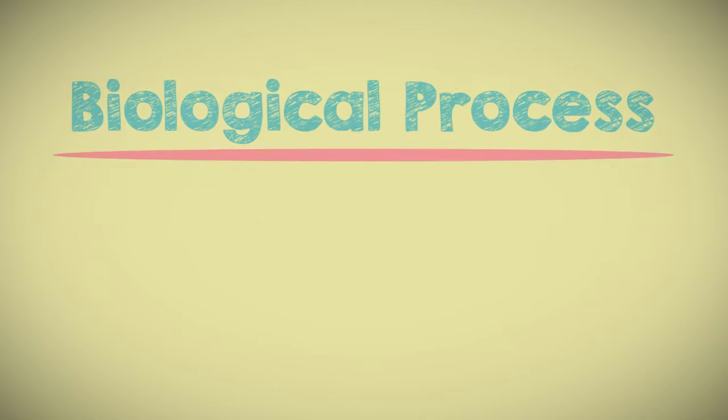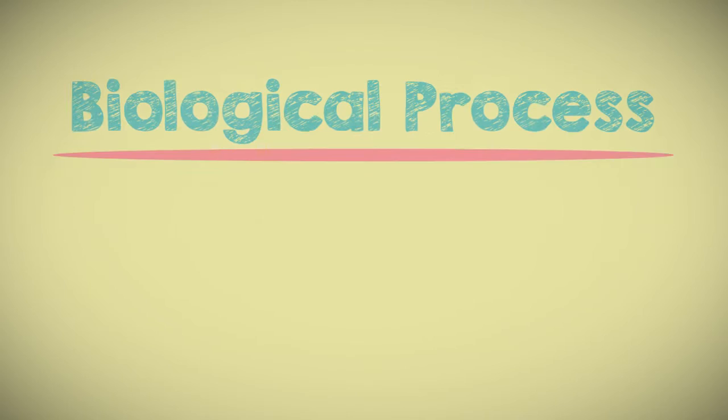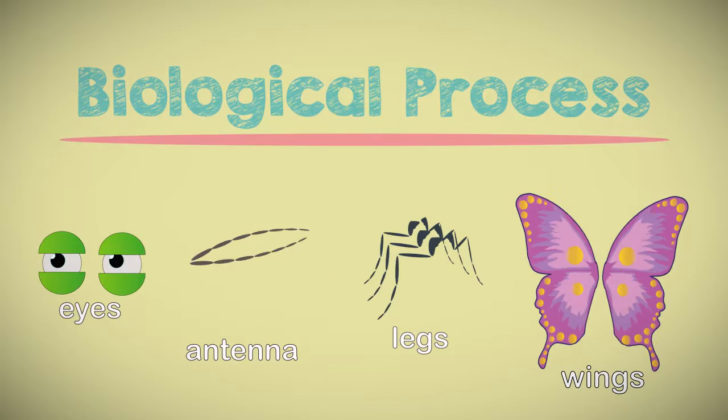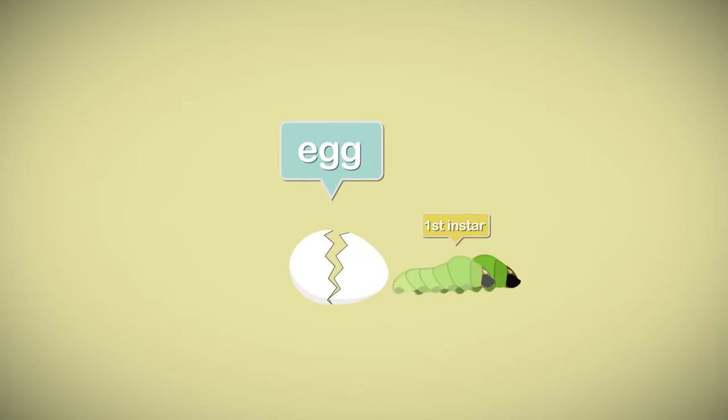Metamorphosis is a biological process in which animal body parts such as eyes, antennae, legs, wings, etc. develop before they are capable of reproduction. It could begin after birth or hatching in a series of life development stages called molting.